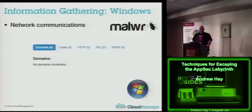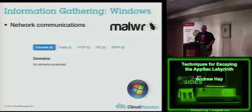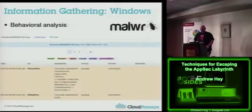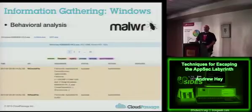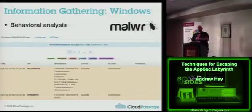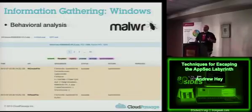If it contacts any sort of domain or has any sort of network connectivity, you'll see it here as well — domains, hosts, any HTTP requests, interactions, IRC, SMTP. Hopefully it doesn't interact with IRC or any of these really, other than domains and hosts. There's also behavioral analysis, where it's going to monitor what's happened from the point of double-clicking on the executable and running through the process. It's going to show every step of the way what was edited — almost like running an executable in a debugger where you're setting breakpoints along the way.